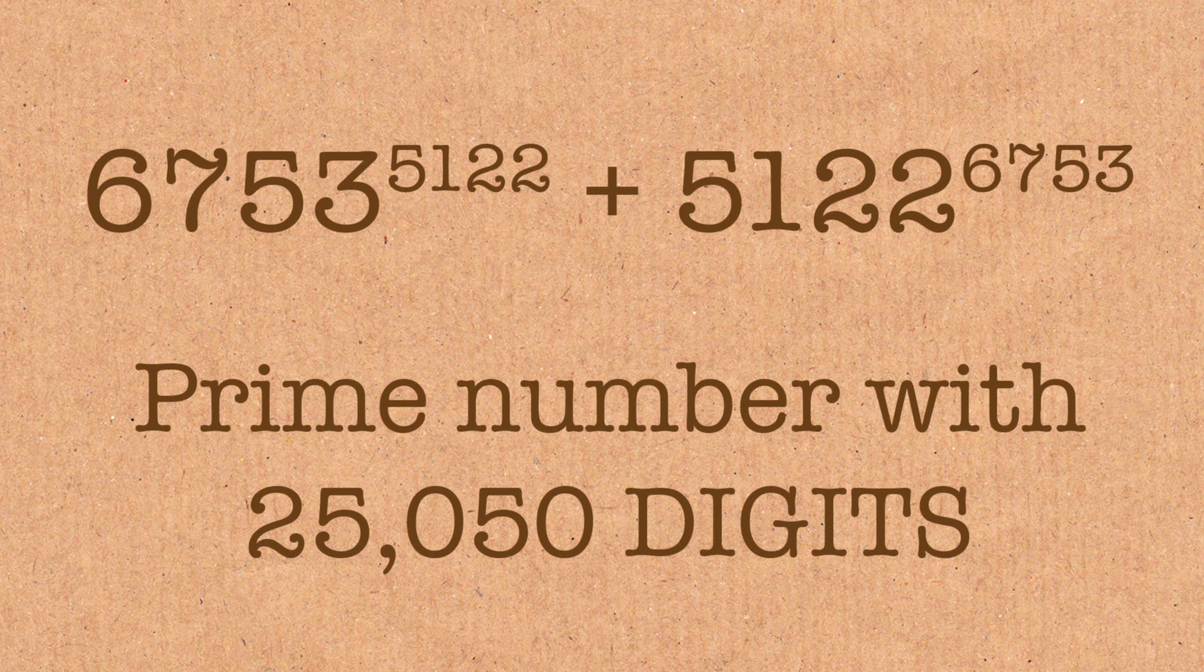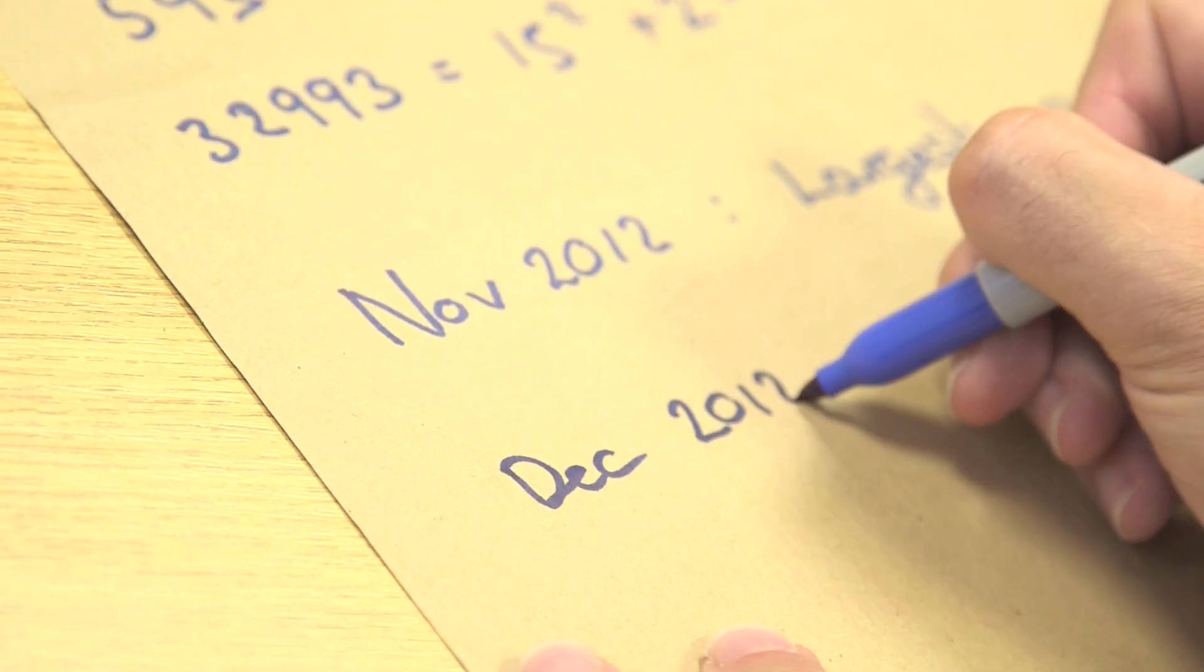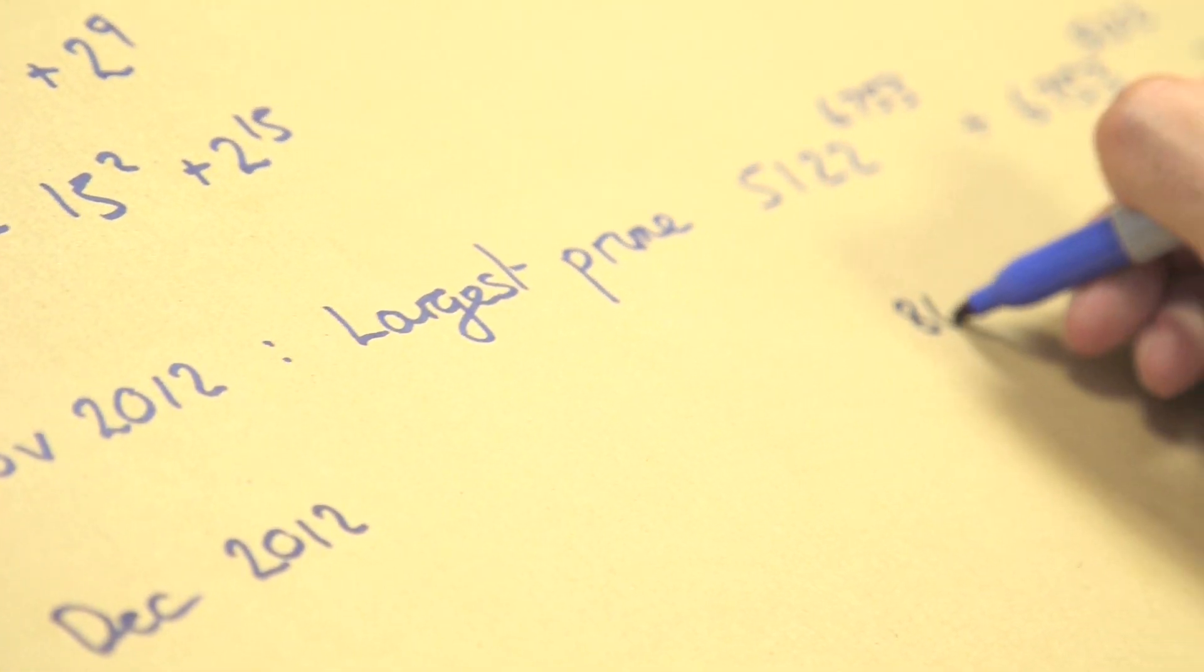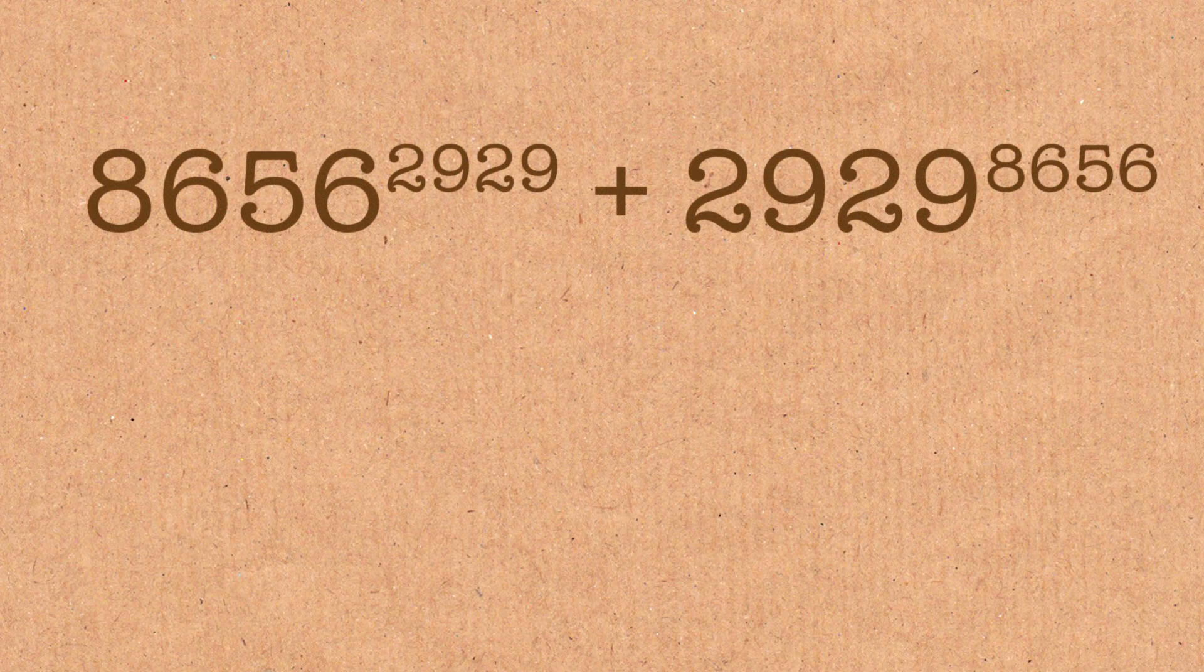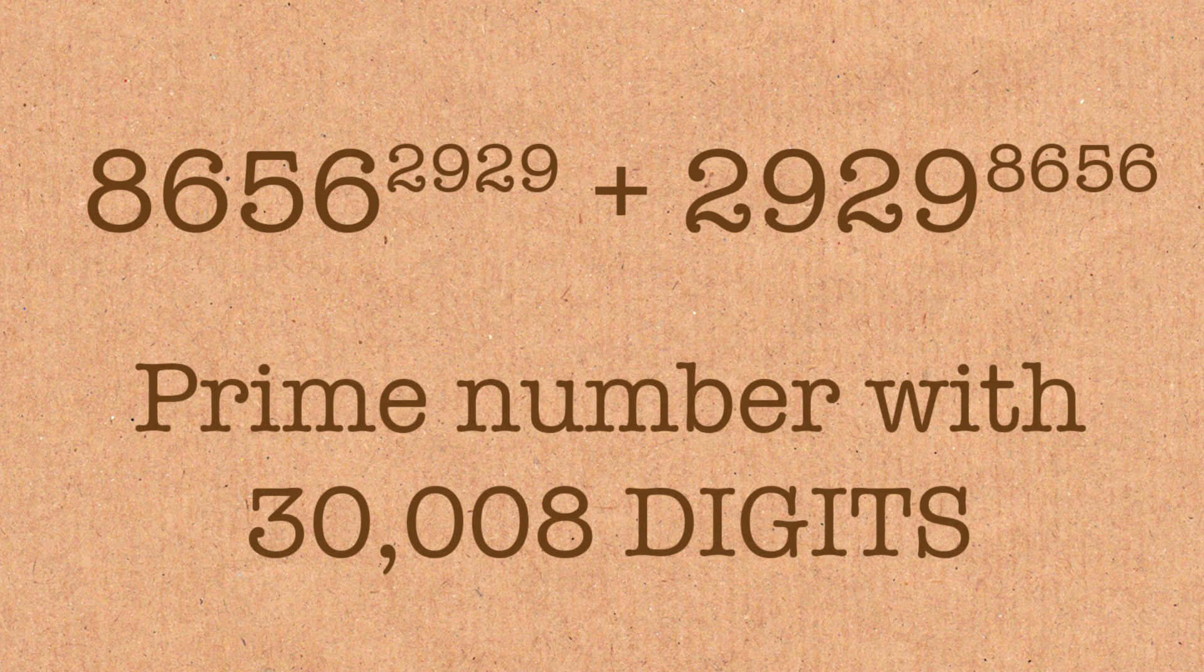But let's not waste effort on that one. Why don't we go to the one which was discovered in December of 2012, which superseded it. And it was made up of 8,656 to the power 2,929 plus 2,929 to the power 8,656. And this is a number that consists of 30,000 digits.